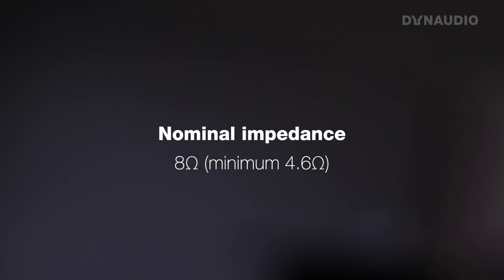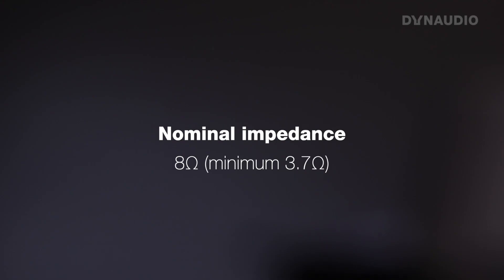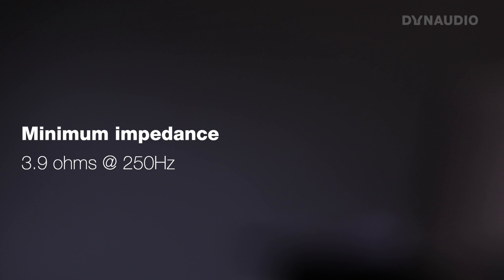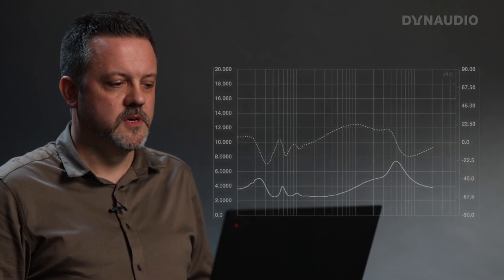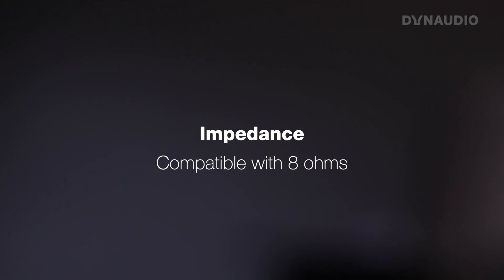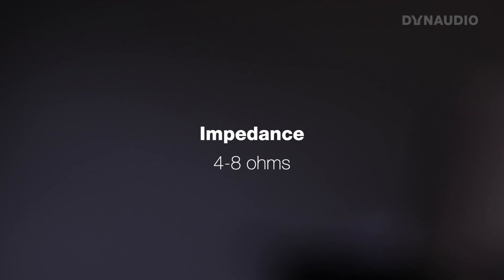Another example: nominal impedance 8 ohms, minimum impedance 4.6 — again, this should actually be rated 4 ohms. Another: 8 ohms nominal, minimum impedance 3.7. Another lists minimum impedance 3.9 ohms at 250 Hz, yet says nominal impedance 8 ohms. There's even one that just says 8 ohms with no minimum stated — third-party measurements show it's clearly below 4 ohms. One says 'compatible with 8 ohms,' which is clearly a dig at the amplifier manufacturer's specifications, when third-party measurements show it's below 4 ohms in actual impedance.